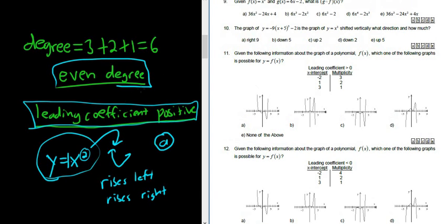So you look at the degree, and it's even. You look at the leading coefficient, so it's positive. Think about the simplest function you know. Draw the picture. It rises left, rises right. So the only one that rises left and rises right is choice A. A is the answer to this question. I hope that made sense.